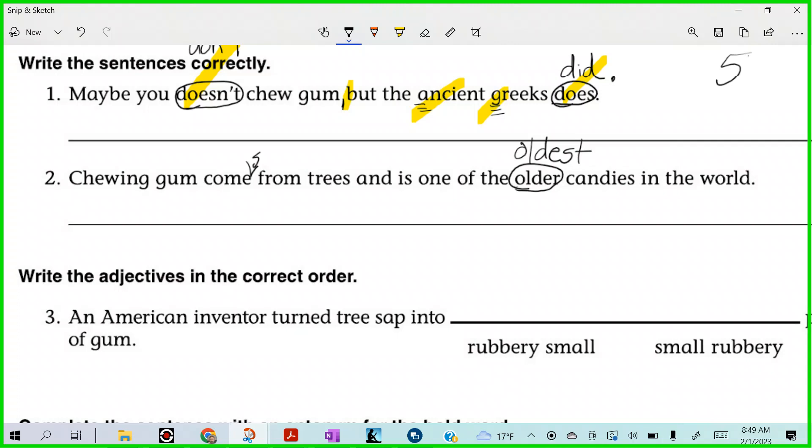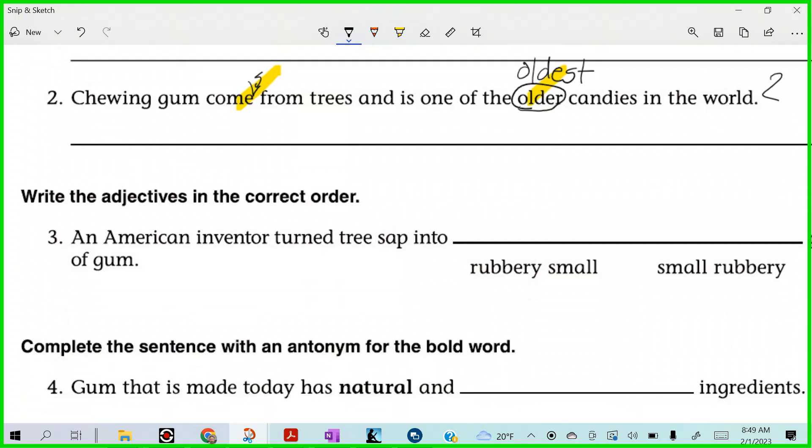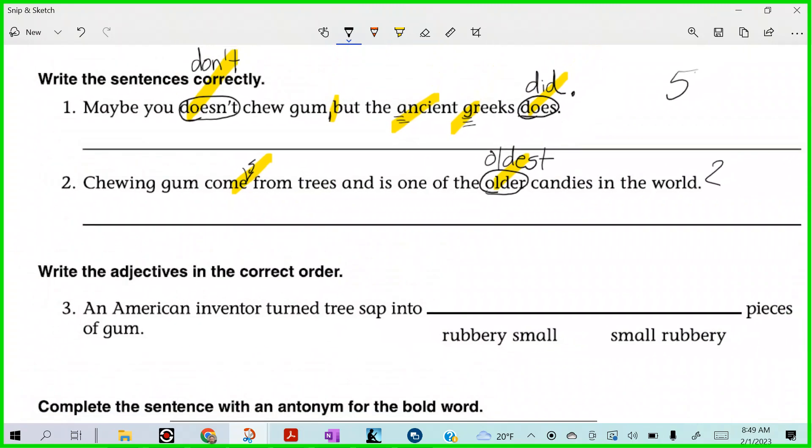I don't see anything else. Do you? I don't. So, it looks like two corrections there. Good job. All right. What's up? What do you see? You could, but I don't think you need it. Chewing gum comes from trees and is one of the oldest candies in the world. That works the way it is.